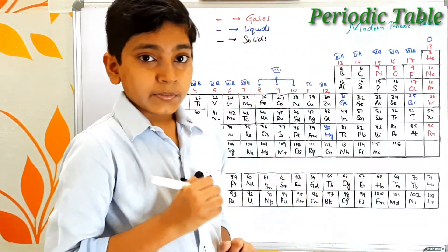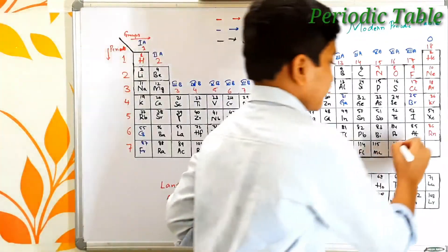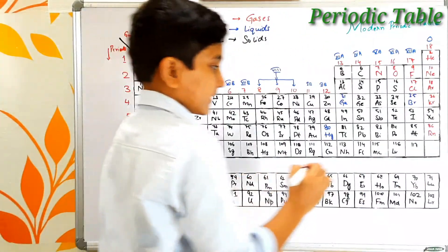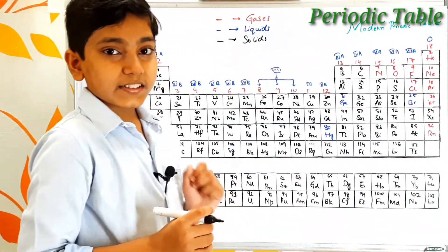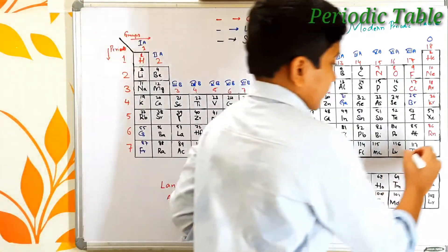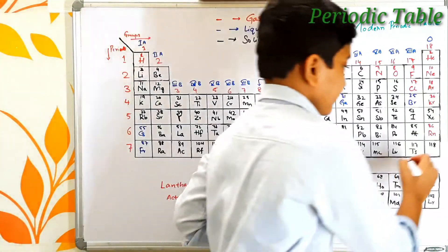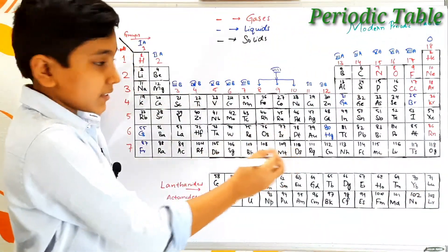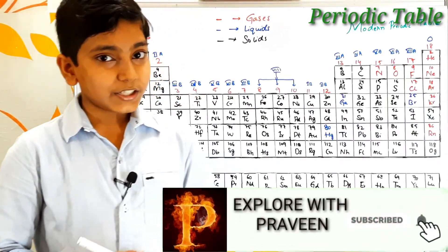Atomic number 116 is livermorium — its symbol is Lv. Atomic number 117 is tennessine — its symbol is Ts, named after the US state of Tennessee. The final element is atomic number 118, oganesson — its symbol is Og. These are all the elements. Please like this video and subscribe to my channel, Explore with Praveen. Thank you.